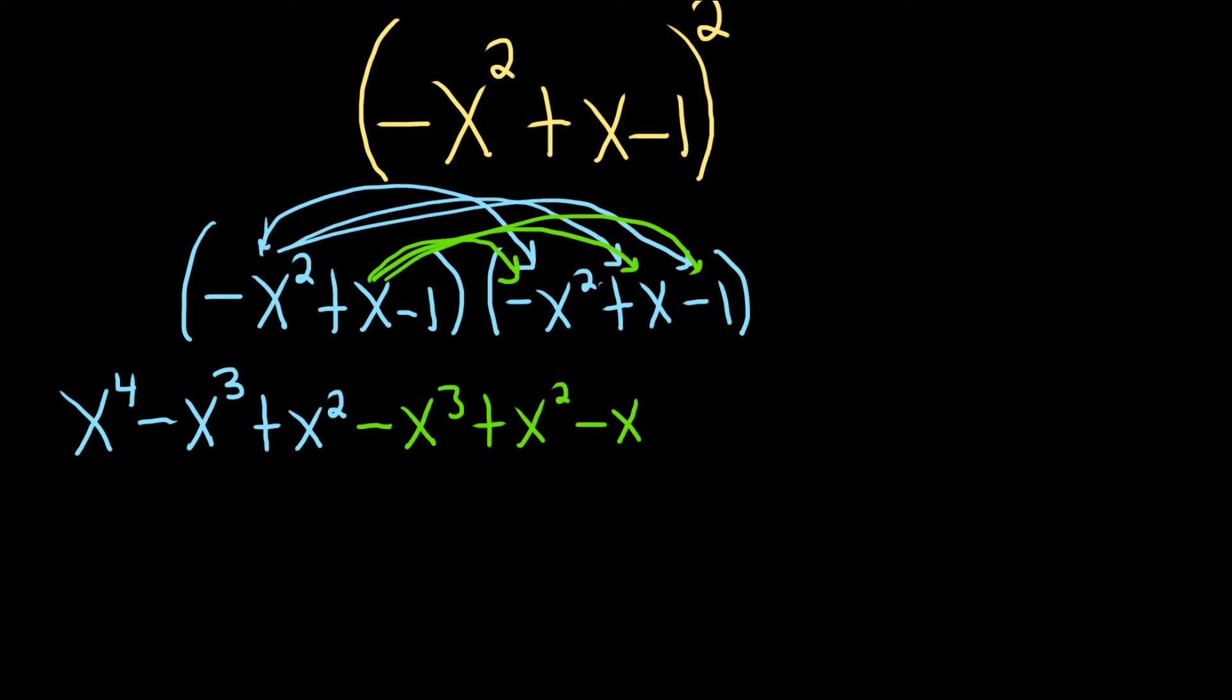All right. We've arrived at the last ones. Let's do it. So negative 1 times negative x squared is going to give us a plus x squared. Negative 1 times x is going to give us a minus x. And negative 1 times negative 1 is going to give us a positive 1.